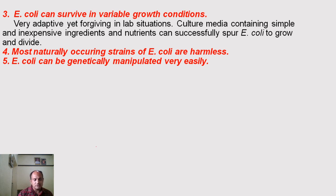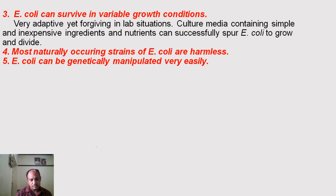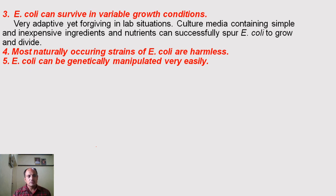The fifth attribute is that E. coli can be genetically manipulated very easily. For example, if you want to change a gene in E. coli to exploit the organism at an industrial level to produce a particular product, you can easily manipulate those genes. These are the five reasons why E. coli is used as a model genetic organism.